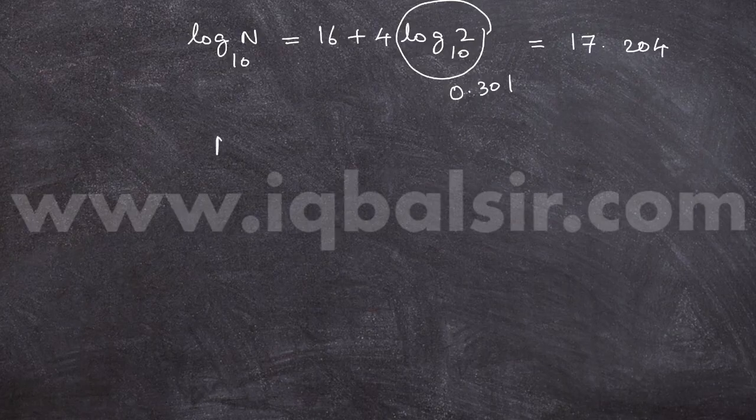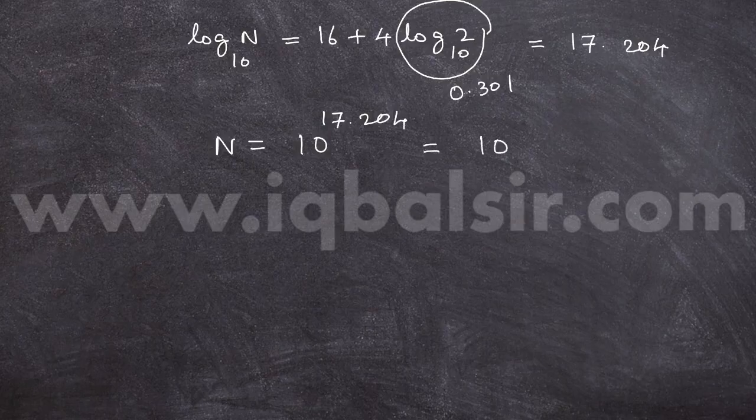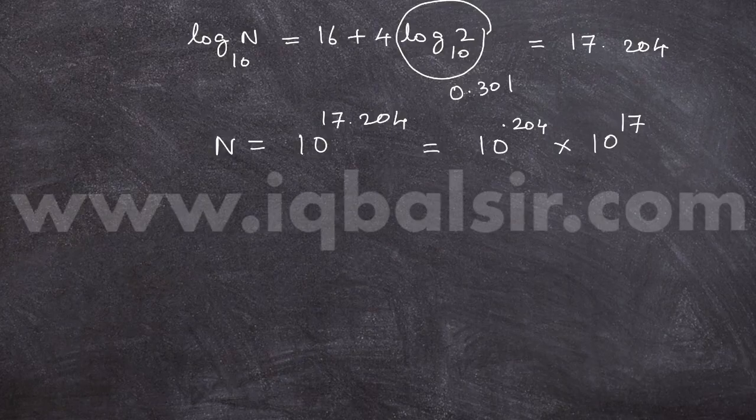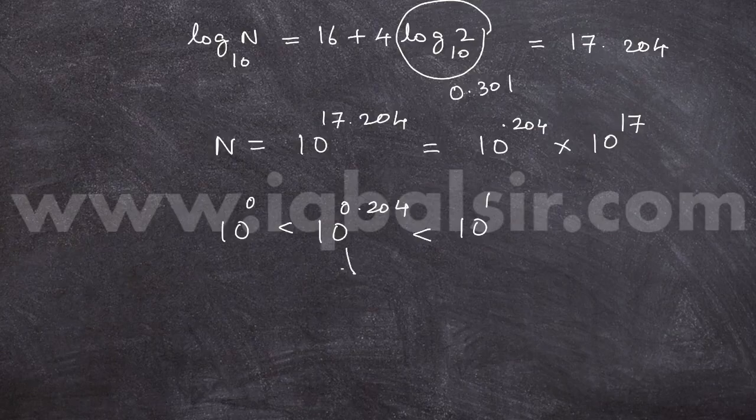When you remove logarithm, N becomes 10 raised to 17.204. So this is 10 raised to 0.204 into 10 raised to 17. Now, 10 raised to 0.204 will lie between 10 raised to 0 and 10 raised to 1. That means this will be a number between 1 and 10.